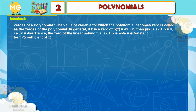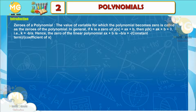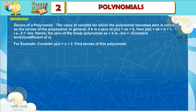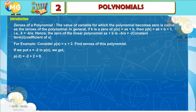Zeros of a polynomial: the value of the variable for which the polynomial becomes 0 is called a zero of the polynomial. In general, if k is a zero of p(x) = ax + b, then p(k) = ak + b = 0, that is k = −b/a. Hence the zero of the linear polynomial ax + b is −b/a, equal to −(constant term)/(coefficient of x). For example, consider p(x) = x + 2. If we put x = −2, we get p(−2) = −2 + 2 = 0. Thus, −2 is a zero of the polynomial p(x).